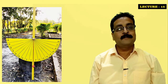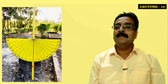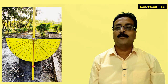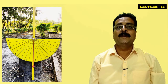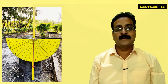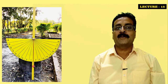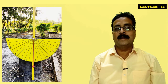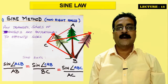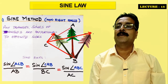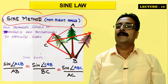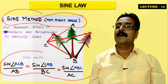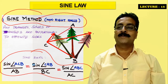We will measure the lean using a simple device made of plywood and a batten, calibrated in degrees. This has been explained in a previous lecture — how to take the theta lean angle of a tree. This will help us calculate by the sine method of a non-right-angle triangle using the sine rules.